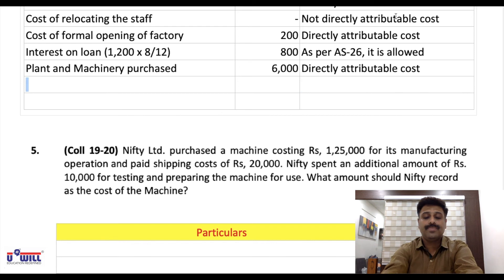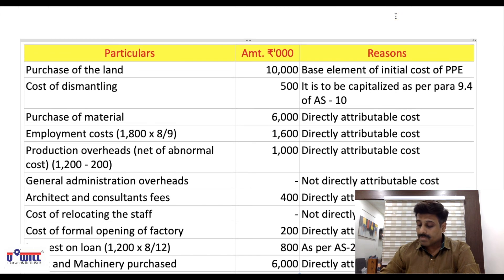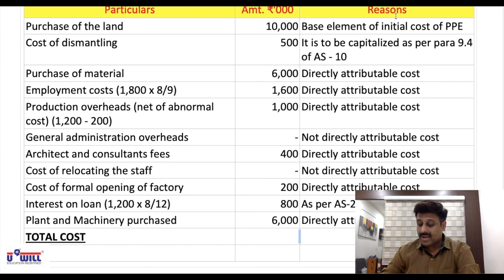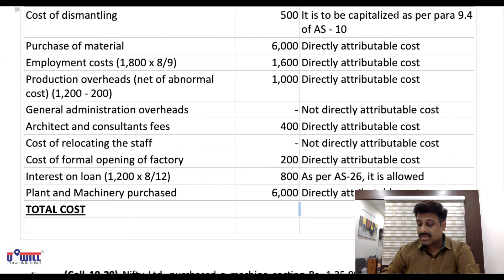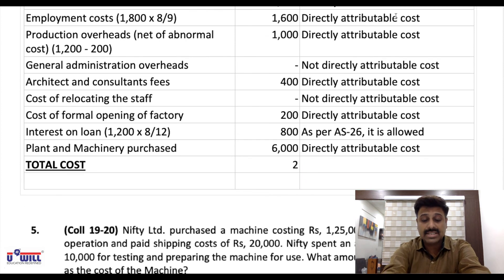Total cost: 10,000 + 500 + 6,000 + 1,600 + 1,000 + 400 + 200 + 800 + 6,000 = 26,500. That is the total cost to be recognized in the balance sheet. This is very important from an exam perspective — MCQs can ask any of these individual amounts.